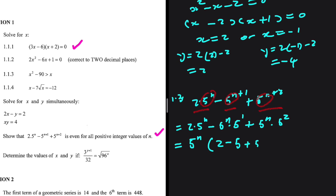After factoring out 5 to the power n, we're left with 5 to the power n multiplied by (2 minus 5 plus 25). That simplifies to 5 to the power n multiplied by 22. Since 22 is an even number, and if we multiply it by any integer the answer is going to be even, this expression will always be even for all positive integer values of n.